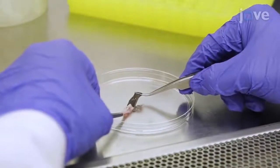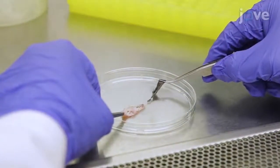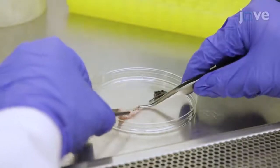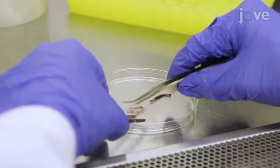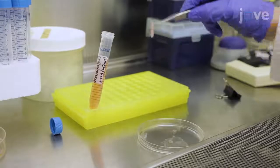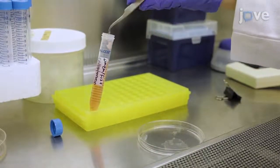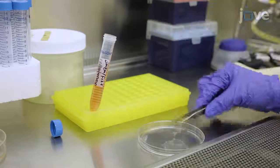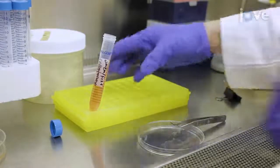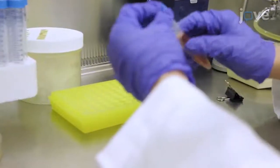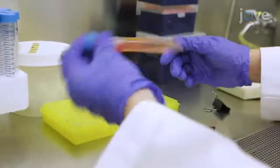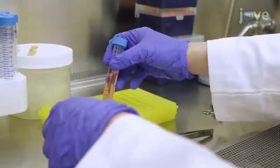The next day, use microdissection forceps to carefully separate the epidermis from the dermal layers in a 10 cm dish. Transfer the resulting dermal tissue to a 15 mL conical tube containing 5 mL of 2 mg per mL collagenase type IV in FBS-free medium supplemented with Antibiotic-Antimycotic.